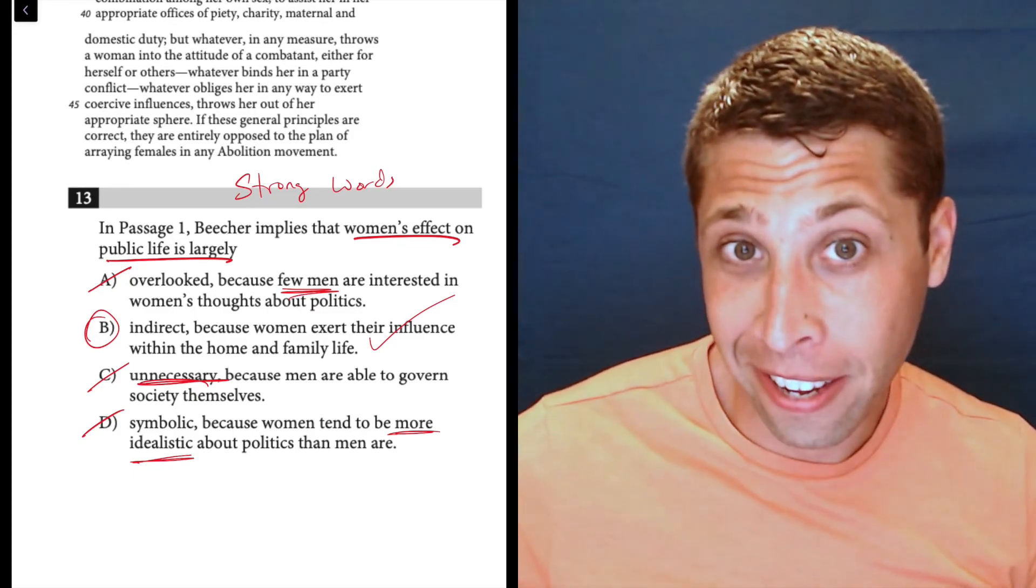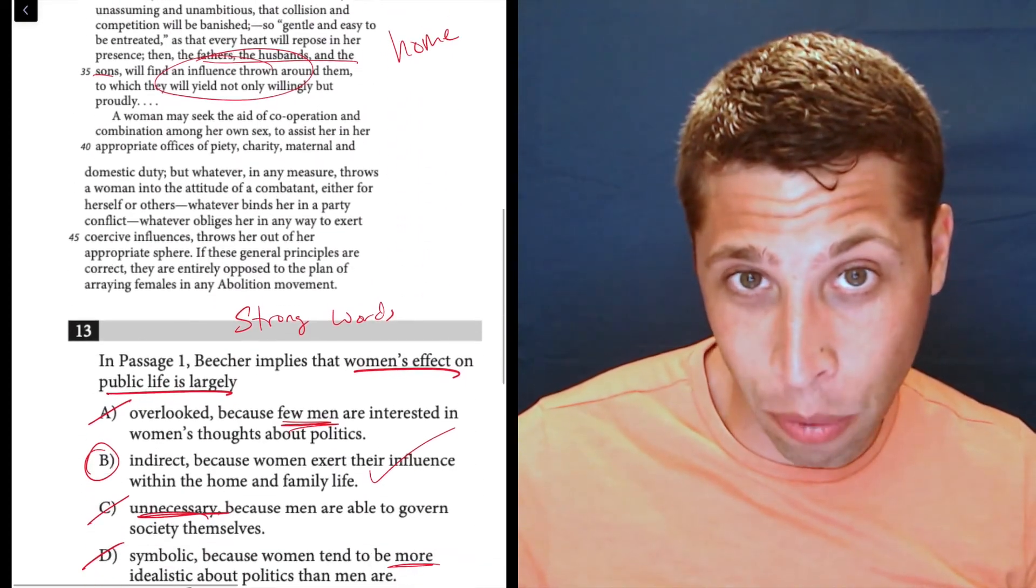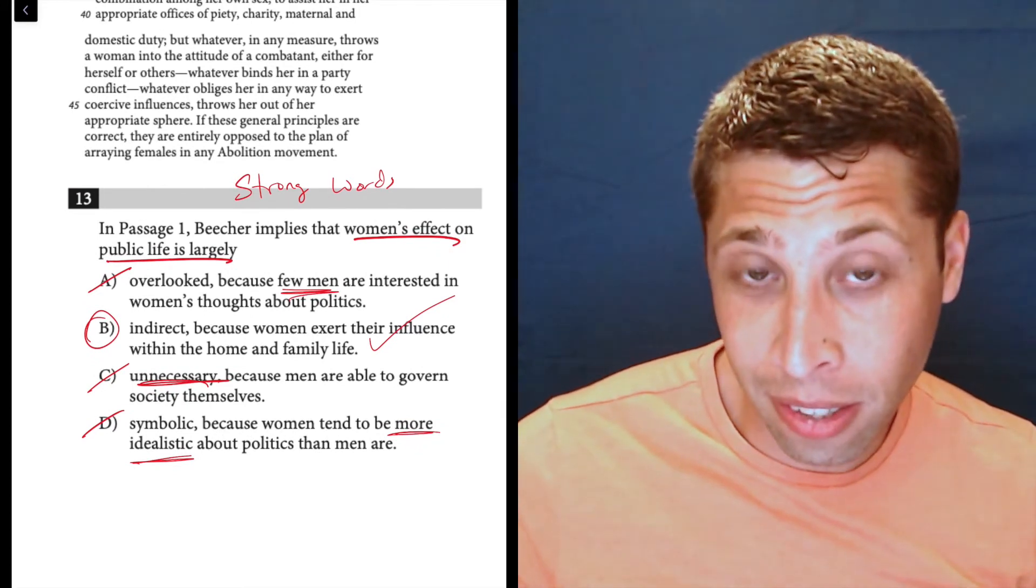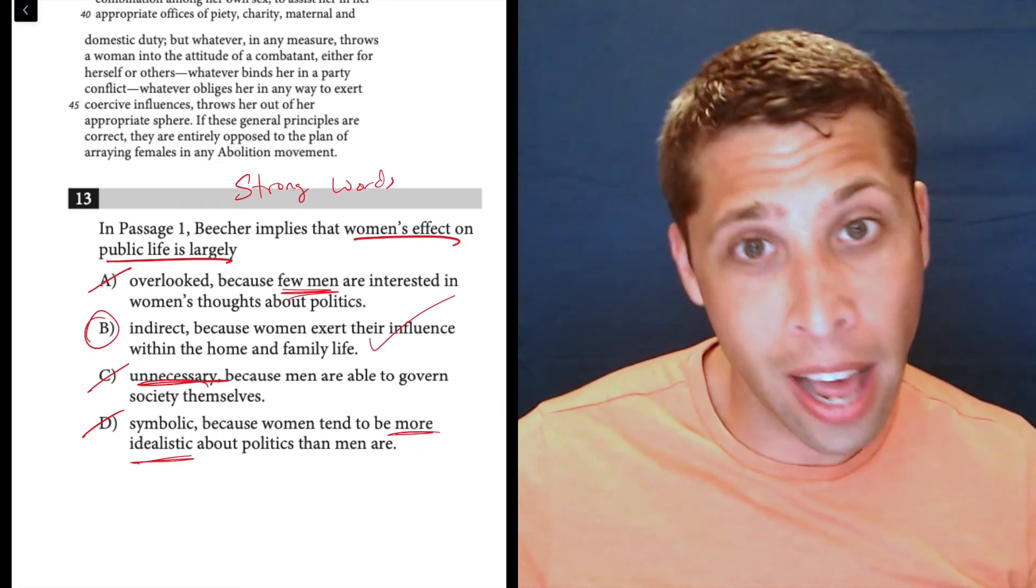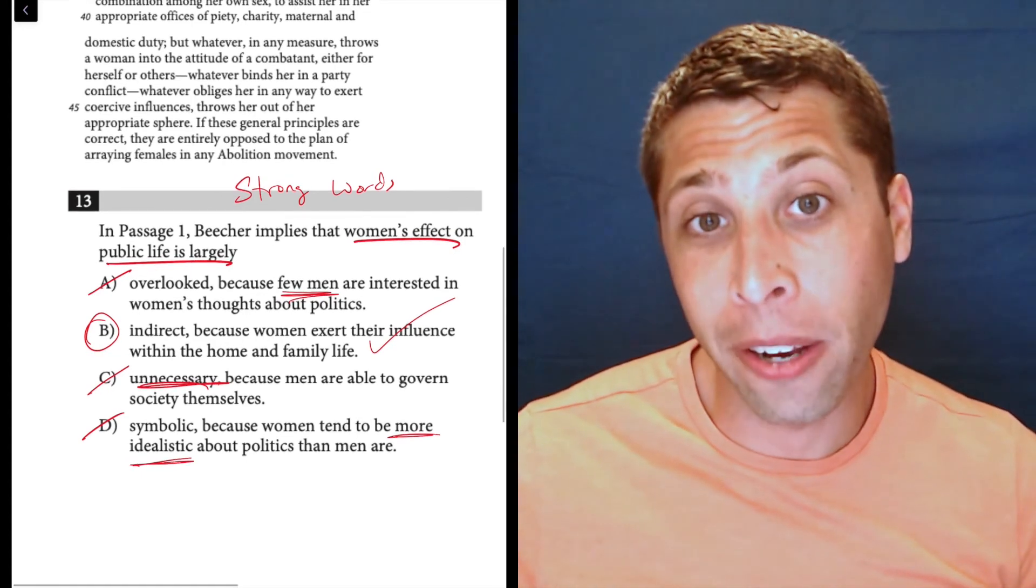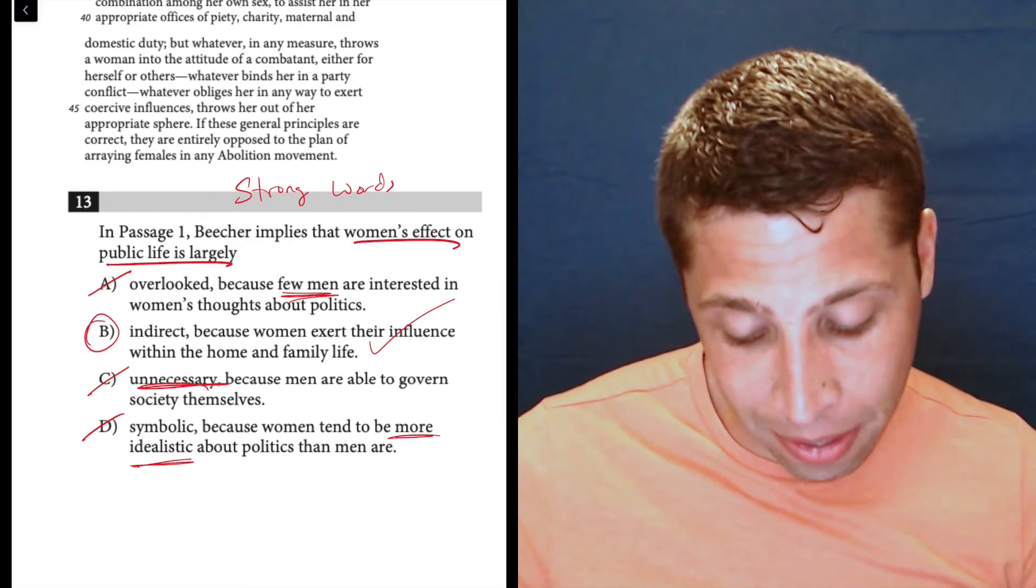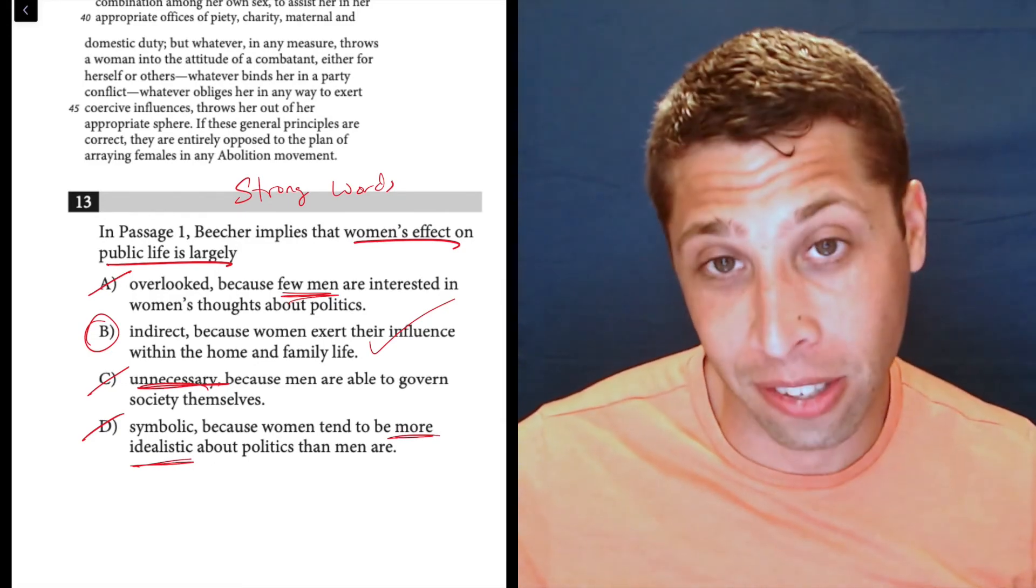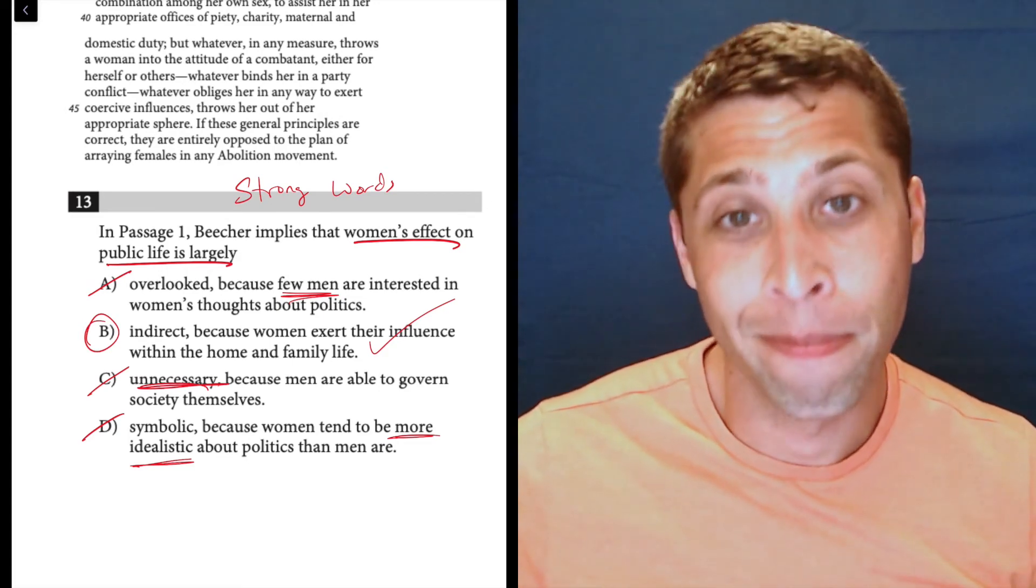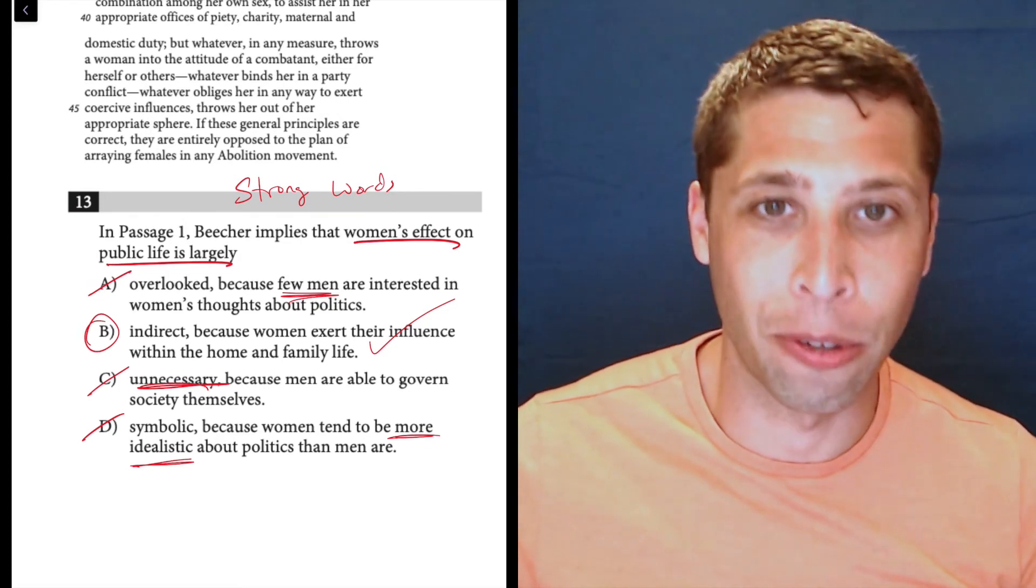It's a weird opinion that Catherine Beecher holds. Catherine Beecher. It's a very old-timey opinion about what women should be doing, and we cannot let that influence us, we have to answer based on her opinion, not upon our own. And so, she thinks it's a good thing that women have this indirect influence. So, she's talking positively about it, and that's why some of these other choices, like overlooked and unnecessary and symbolic, are also wrong. Those are a little too negative for the point she's trying to make. It's weird, but that's the challenge with the historical passage. You can't let your own opinions influence your answers.